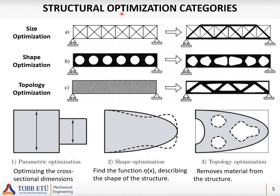There are three structural optimization categories based on the type of design variables: size, shape, and topology optimization. In size optimization we typically have truss members as the structure. When a load is applied with boundary conditions, we find the optimum thickness or diameter — a cross-section parameter — of each truss member. The size remains constant along a member's length, but some members will be thicker than others. This is called size optimization.